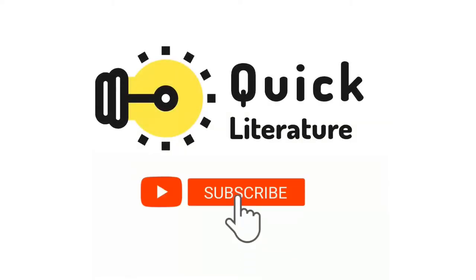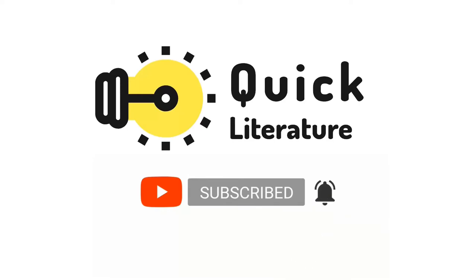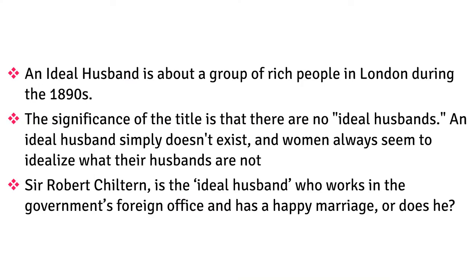Welcome to Quick Literature Academy. An Ideal Husband is about a group of rich people in London during the 1890s. The significance of the title is that there are no ideal husbands — an ideal husband simply doesn't exist, and women always seem to idealize what their husbands are not.